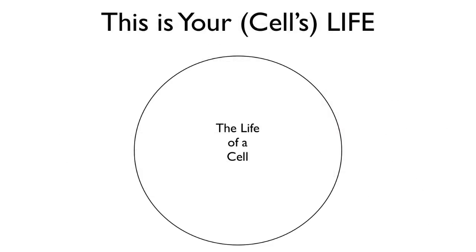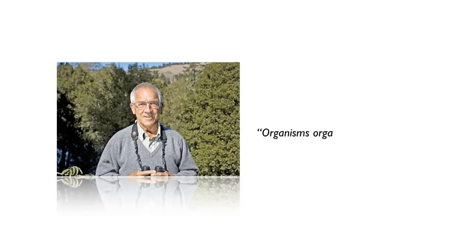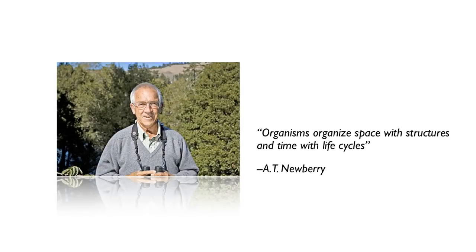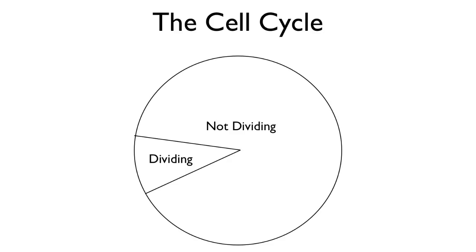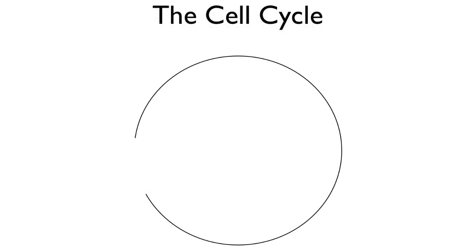So we're going to talk about the life of a cell. My mentor, Todd Newberry, said that organisms organize space with structures and time with life cycles. You can basically divide the cell's life cycle into two periods: when the cell is not dividing, and when it is dividing. The cell spends most of its time not dividing. This non-dividing phase we call interphase — inter means between. The cell division stage we refer to as cell division, and we'll subdivide these into more phases to look at different events that occur.